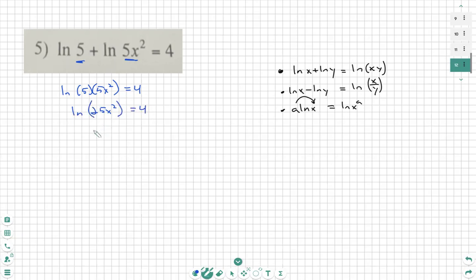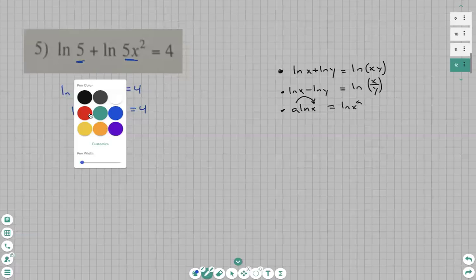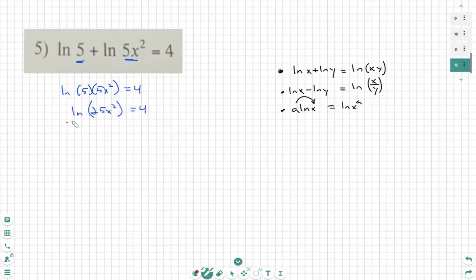At this point, we need to cancel my ln. In order to cancel an ln, we have to use an e. And what I do to one side, I have to do to both.